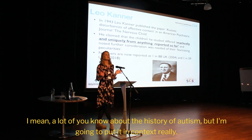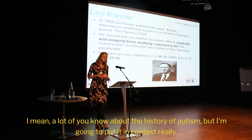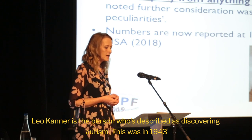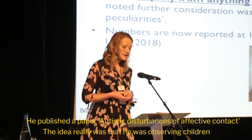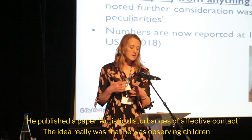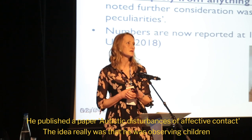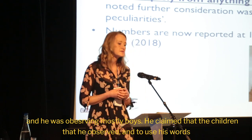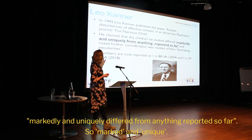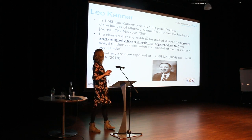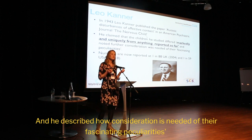A lot of you know about the history of Autism, but I'm going to put it in context. Leo Kanner is the person described as discovering Autism. This was in 1943. He published a paper called 'Autistic Disturbances of Affective Contact.' He was observing children — mostly boys — and claimed they markedly and uniquely differed from anything reported so far. He described how consideration was needed of their fascinating peculiarities.